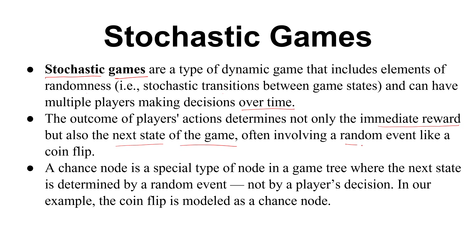We can take the Random Event example of a Coin Flip. What happens in a coin flip? We flip the coin and randomly, heads or tails will occur — we don't know which one in advance. That is why we have added a new type of node to the game tree called the Chance Node. A Chance Node is a special type of node in a game tree where the next state is determined by a random event.